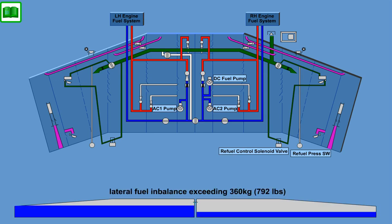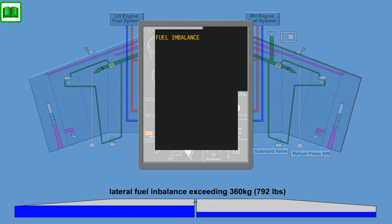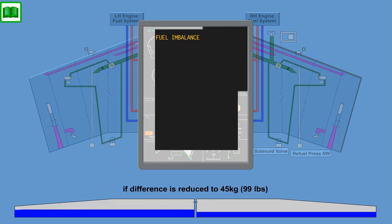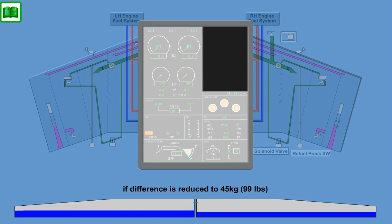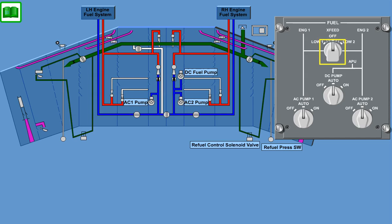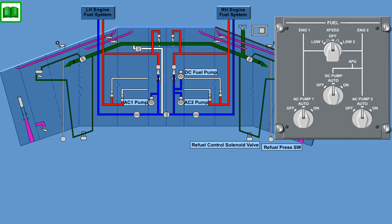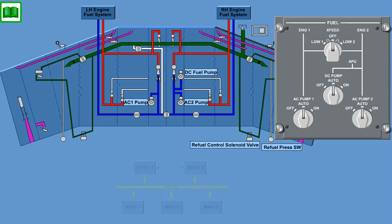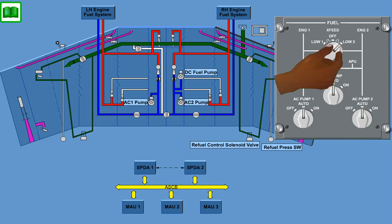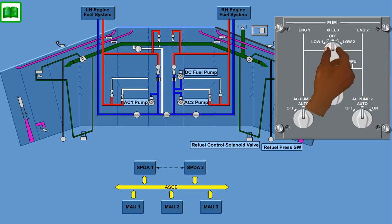Lateral fuel imbalances exceeding 360 kilograms are enunciated on the ICUS by the message Fuel Imbalance. This message will disappear when the difference is reduced to 45 kilograms (99 pounds). A three-position rotary switch on the cockpit control panel controls the cross-feed valve and associated AC auxiliary pump if the AC pump controls are in the auto position. If an AC auxiliary pump switch is in the off or on position, this command will override the cross-feed command. When the cross-feed switch is in the low 1 or low 2 position, SPDA 2 commands the cross-feed shut-off valve open. When the cross-feed switch is in the off position, SPDA 2 commands the cross-feed shut-off valve closed.